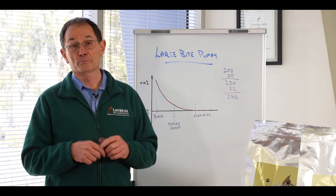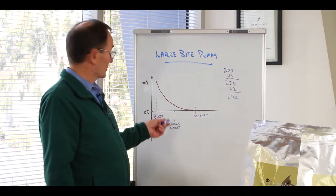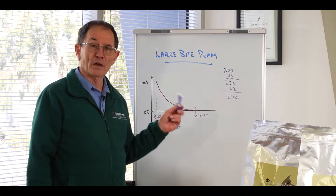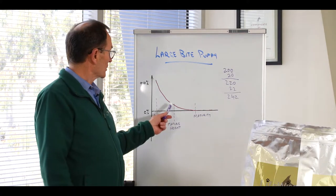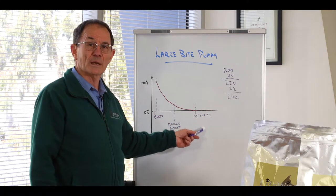So for a small breed like a toy breed for example it might get to this mature height stage at about five months of age which means that it's going to be mature at about 10 months of age.